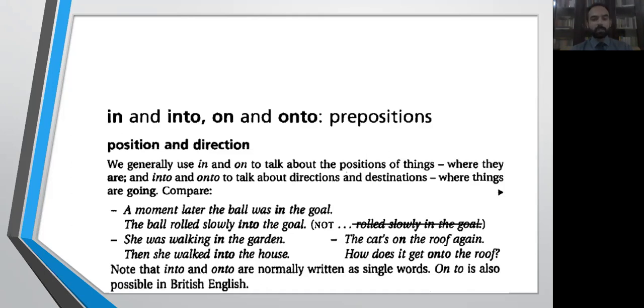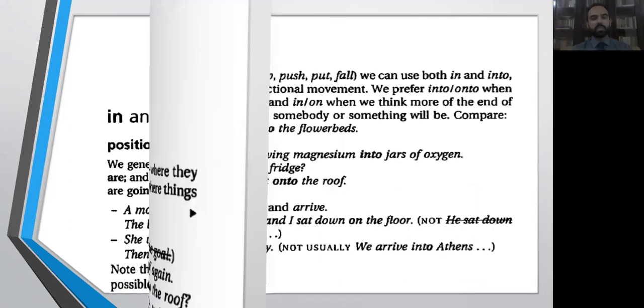We use 'into' and 'onto' to talk about directions and destinations - where things are going. You must also note that 'into' and 'onto' are normally written as single words. However, in British English it's also possible to write 'onto' as two separate words.